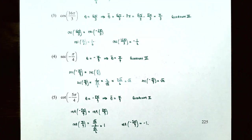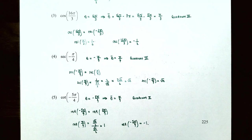This is a good place to stop our video. We talked about finding function values for the six trigonometric functions of 30°, 45°, and 60° (equivalently π/6, π/4, and π/3 radians), and we used reference angles to evaluate trigonometric functions. If you have any questions about the examples or your homework, please let me know. See you in the next video when we discuss using trigonometric identities to evaluate trigonometric functions.